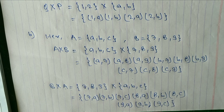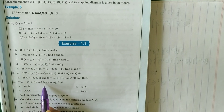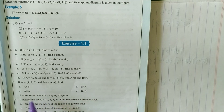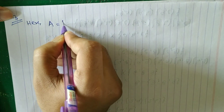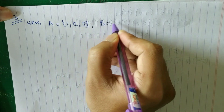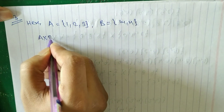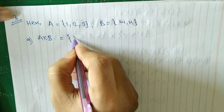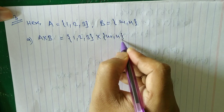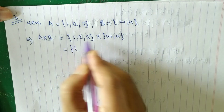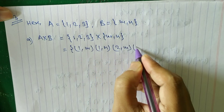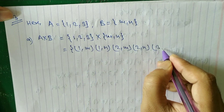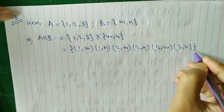Look at question number 3. Here a = {1, 2, 3} and b = {m, n}. We have to find a×b, b×a, a×a, and b×b. For part a, a×b: a = {1,2,3} cross b = {m,n} gives (1,m), (1,n), (2,m), (2,n), (3,m), (3,n).